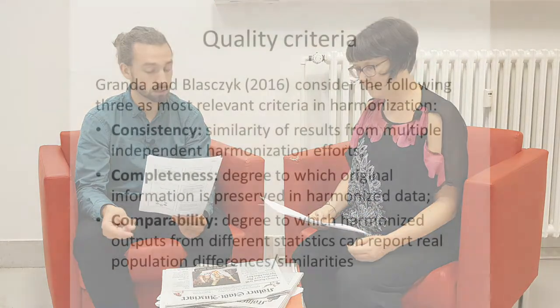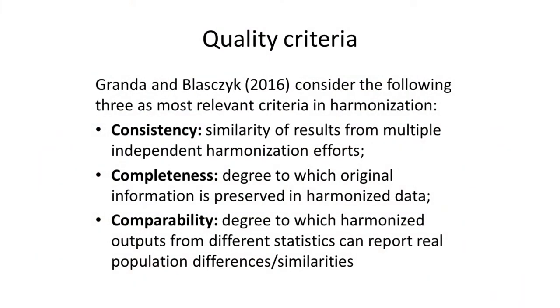All of that leads on to the issue we want to focus on in this video: quality control and quality checks. Granda and Blasek had some advice about conceptually organizing harmonization in a way that you can think about the quality of your data. They propose that you should have an eye on the consistency of your data, which means a certain similarity of results from multiple independent harmonization efforts. Also, you should watch your completeness, which is the degree to which the original information is preserved in your harmonized data. And finally, comparability — the degree to which the harmonized outputs from different statistics can report real population differences. With all those criteria in mind, you can guarantee high quality data harmonization.